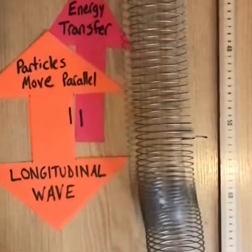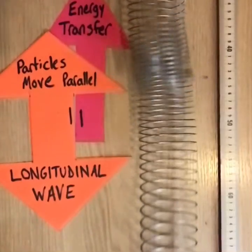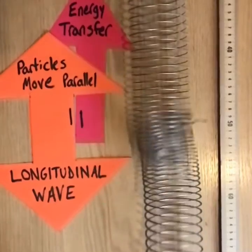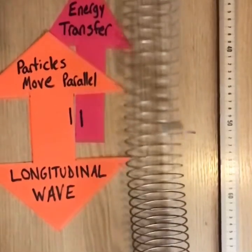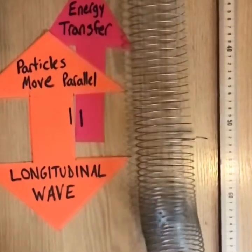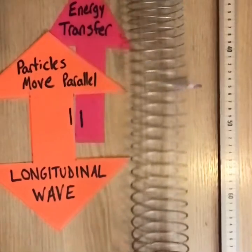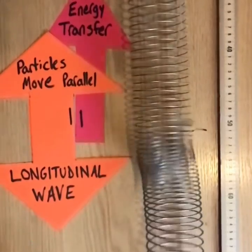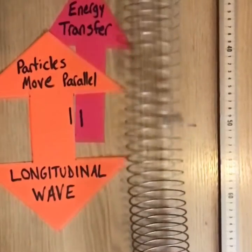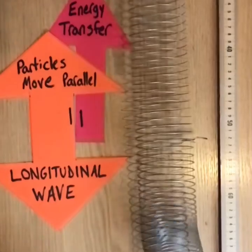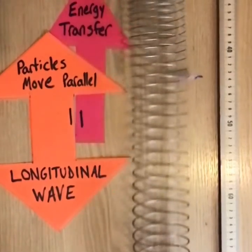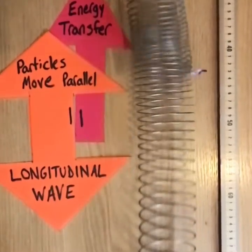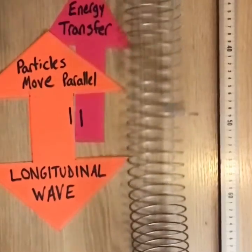In a longitudinal wave, remember the particles move parallel to the direction of energy transfer. Here the wave is moving from the bottom of the screen to the top of the screen. But do you see how the sticker attached to the center of the slinky oscillates up and down? It doesn't continue on with the wave. That's important — remember waves are transferring energy.